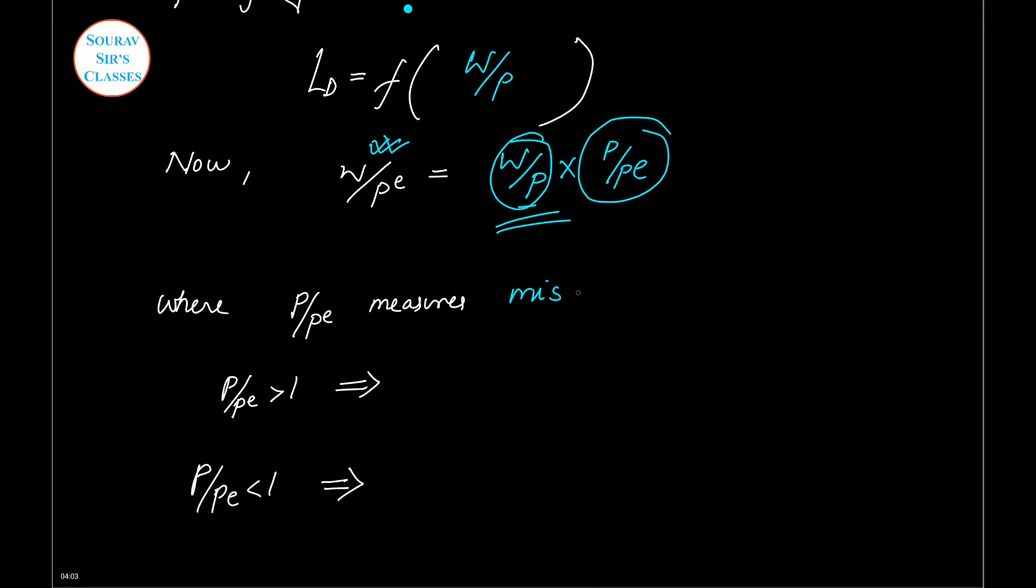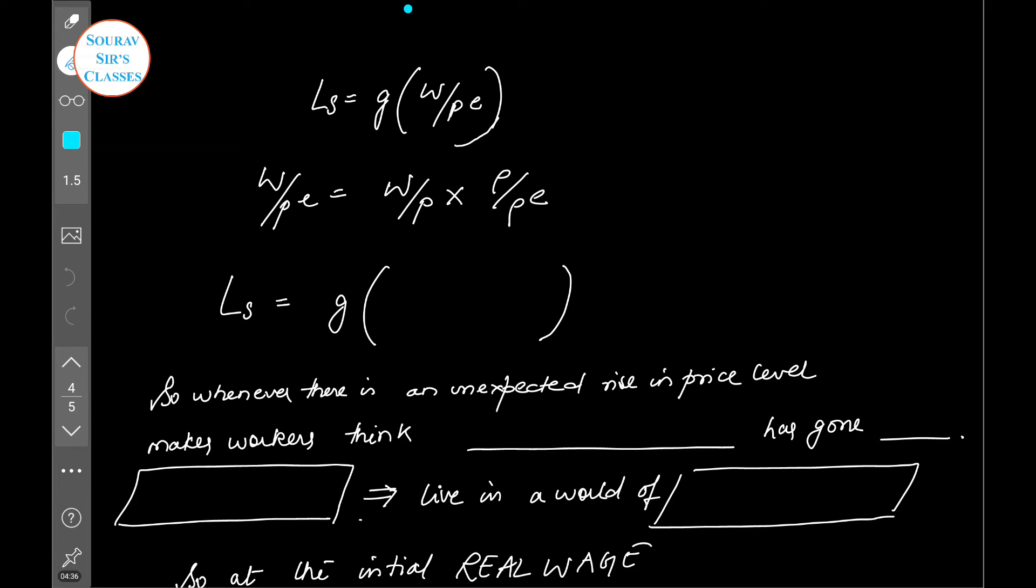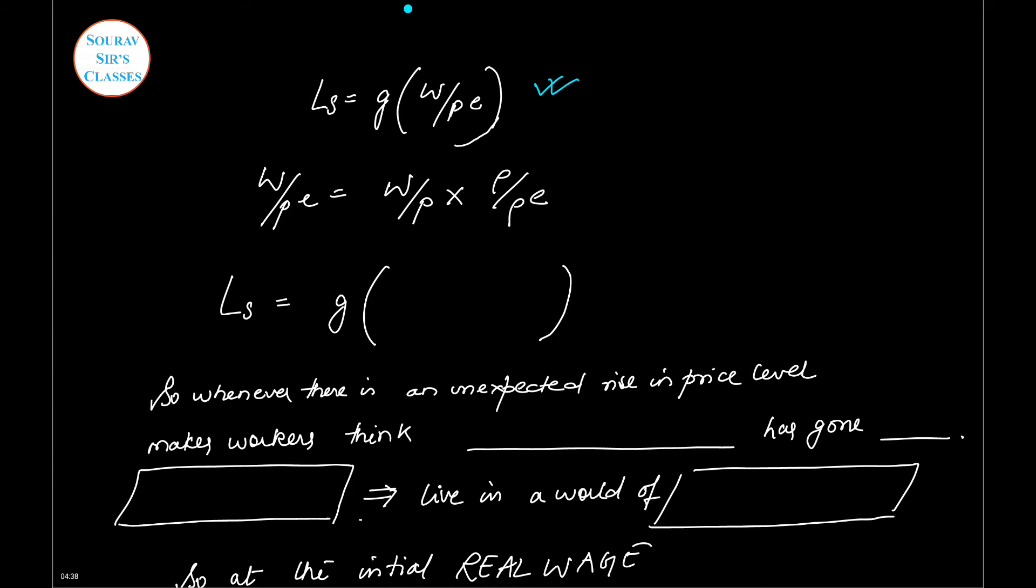Now let us break this and understand. This is the misperception of the price level. So let this be greater than one. This implies P is greater than PE—that means your expected is less than your actual. And if it is less than one, P will be less than PE.